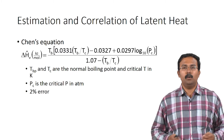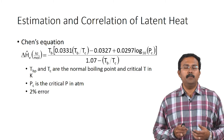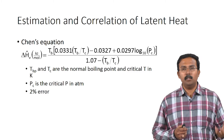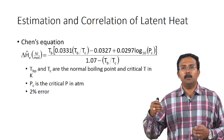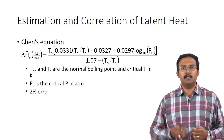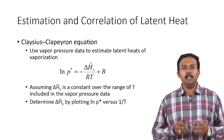Chen's equation is a good correlation to use. However, you need information not just about the boiling point but also about the critical temperature and critical pressure for the liquid you are looking at.